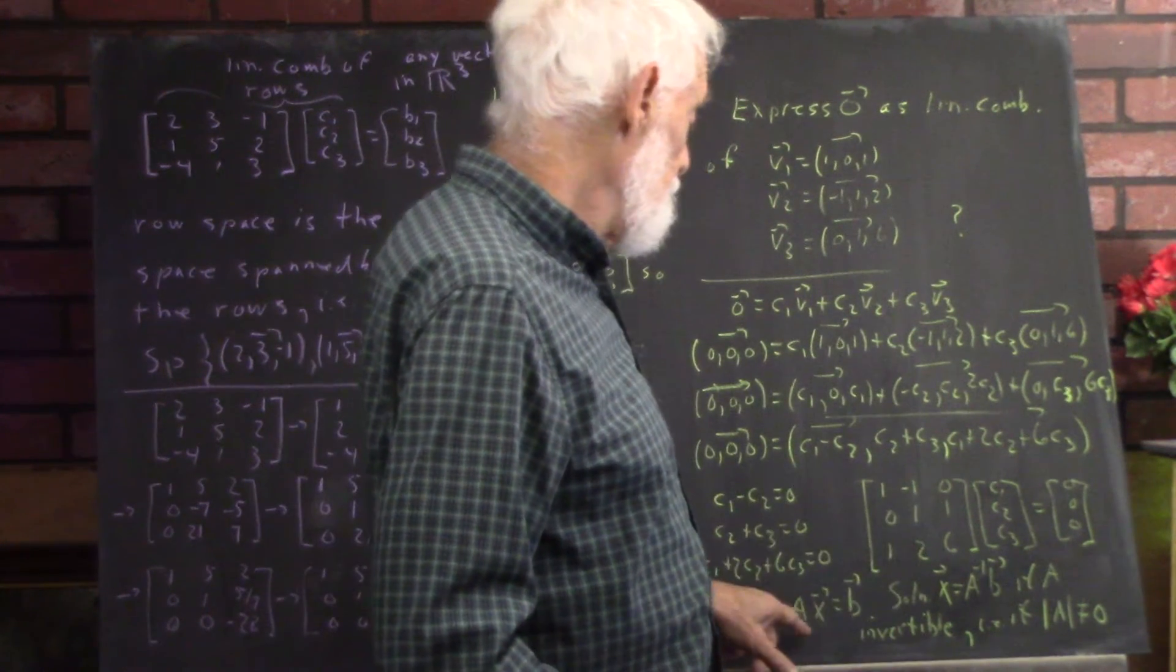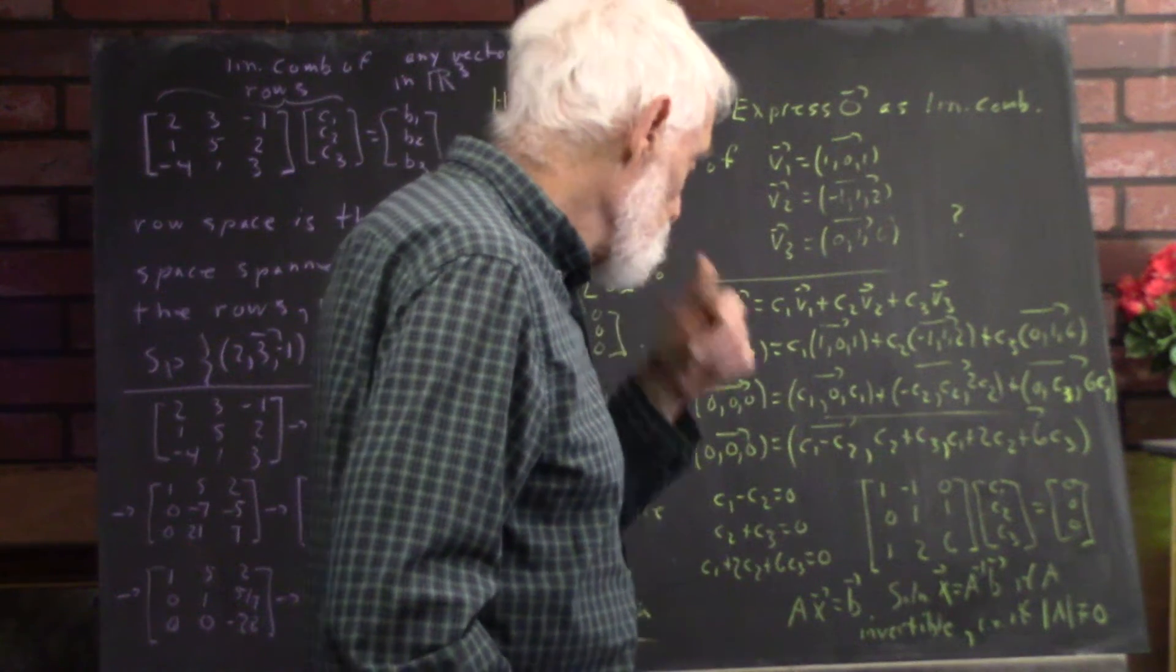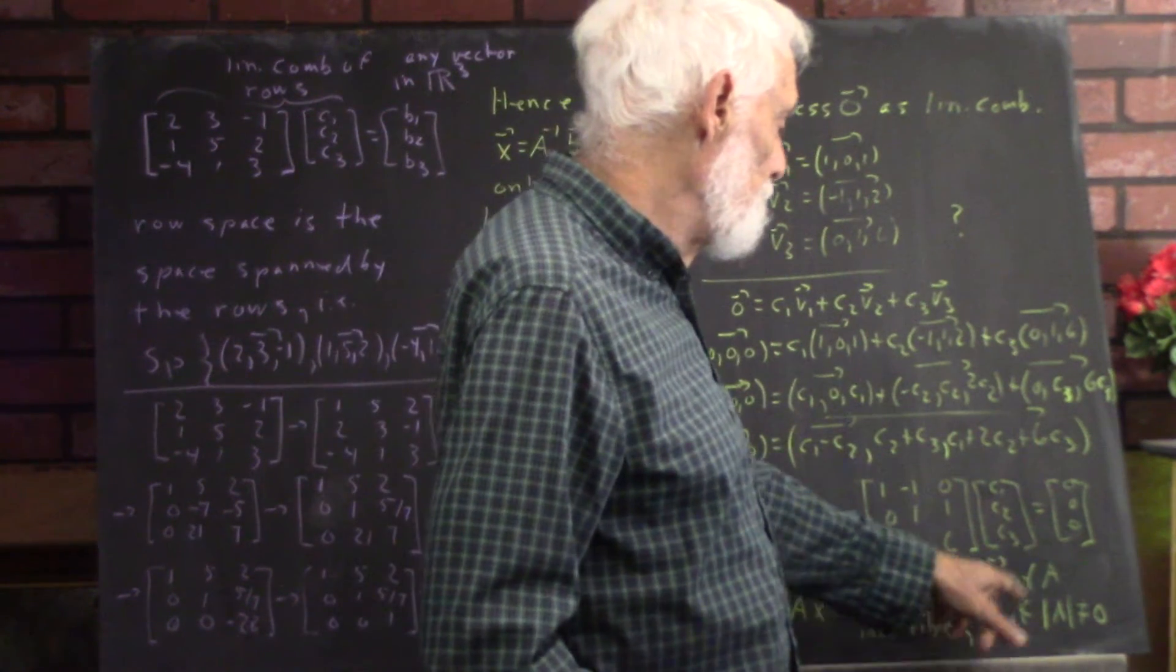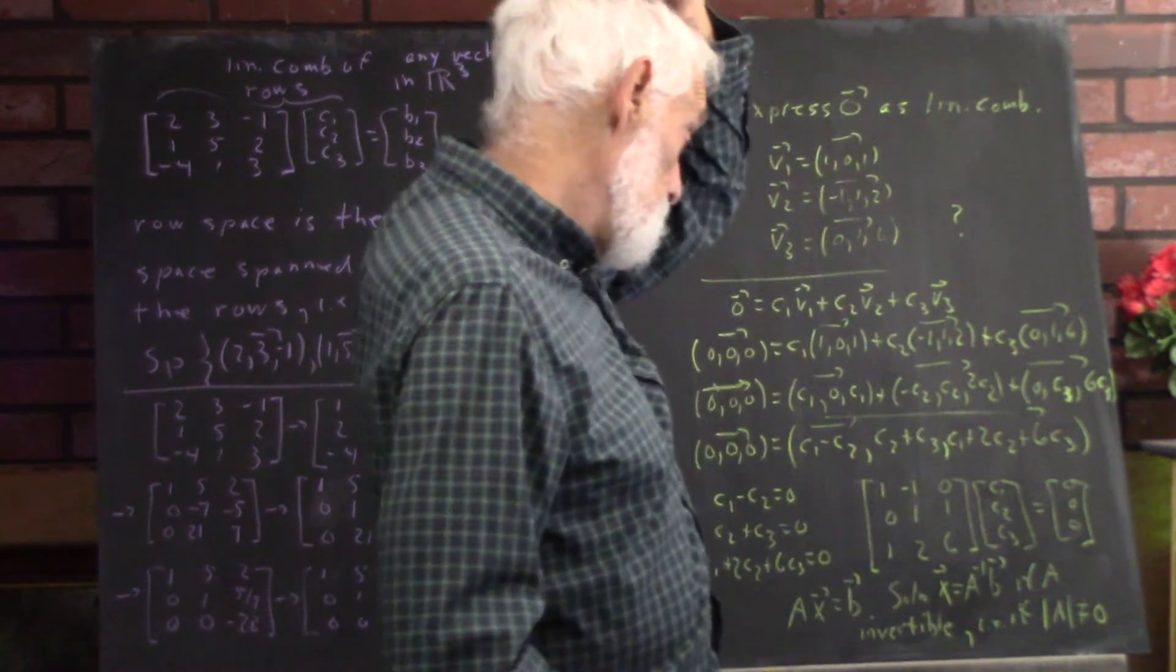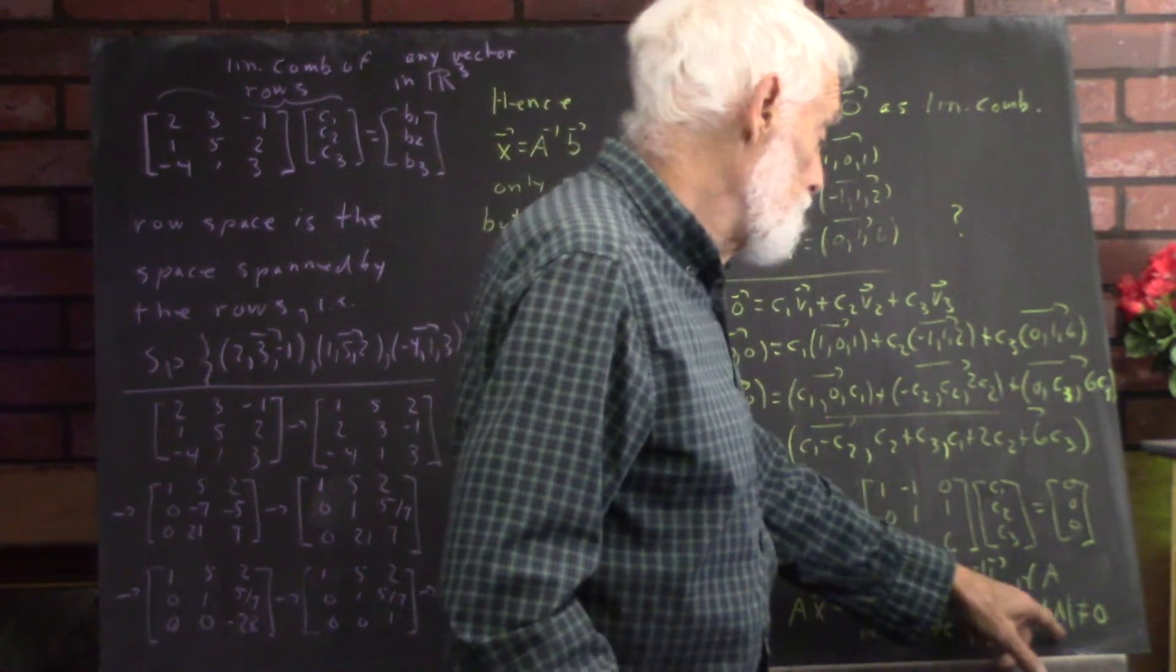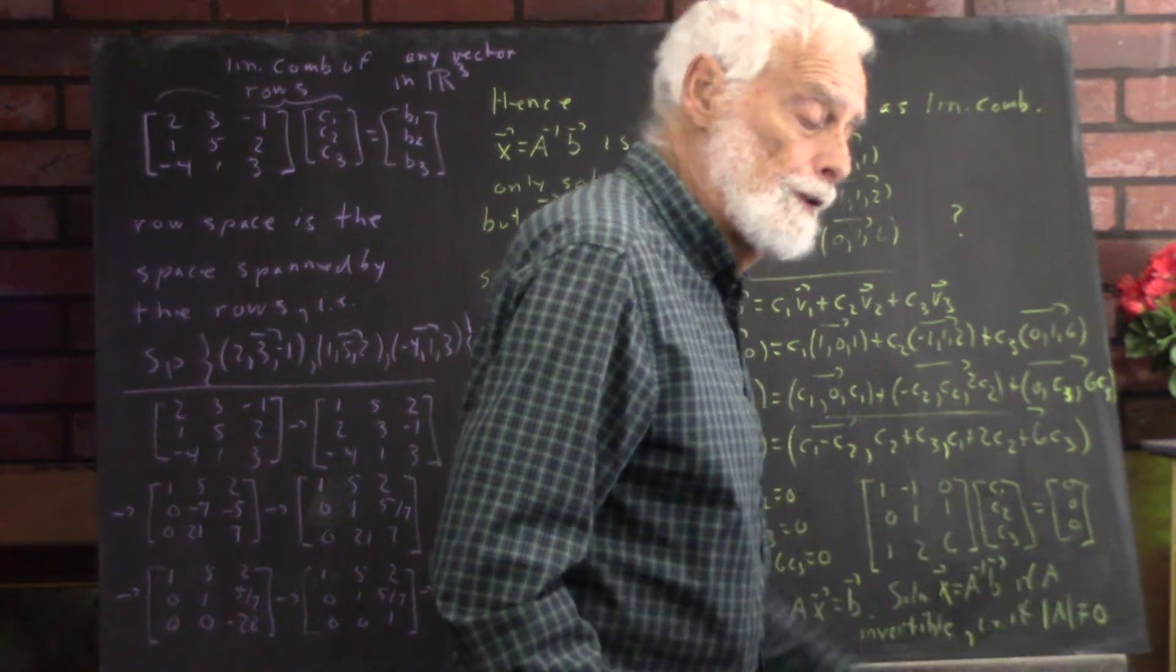And this is the form ax equals b. Your solution is x equals a inverse b provided a is invertible. That is, if the determinant of a is non-zero.